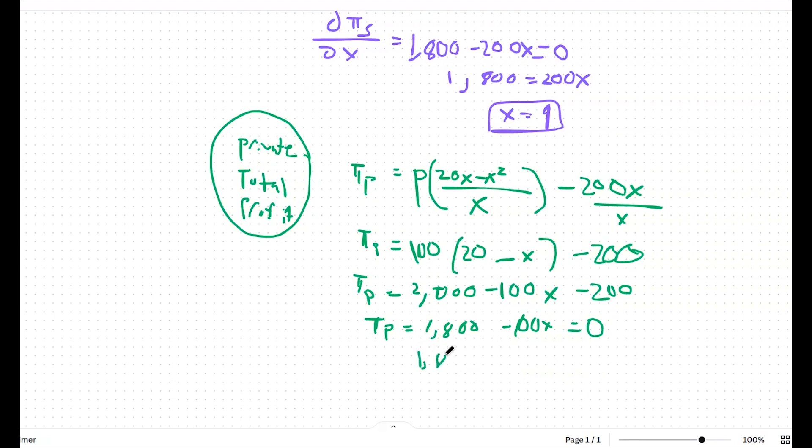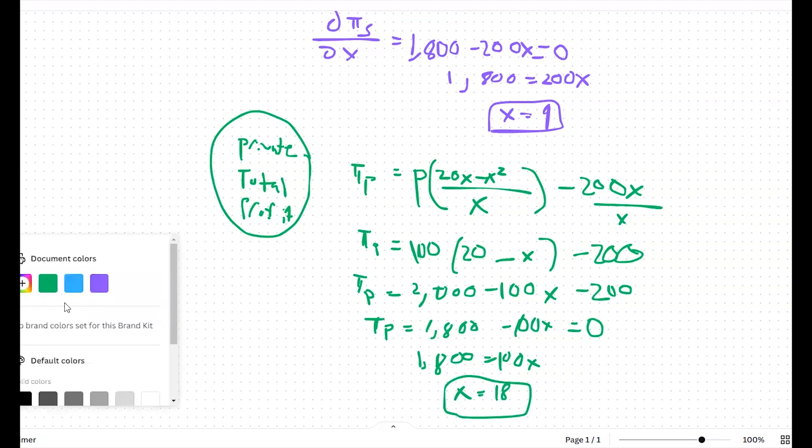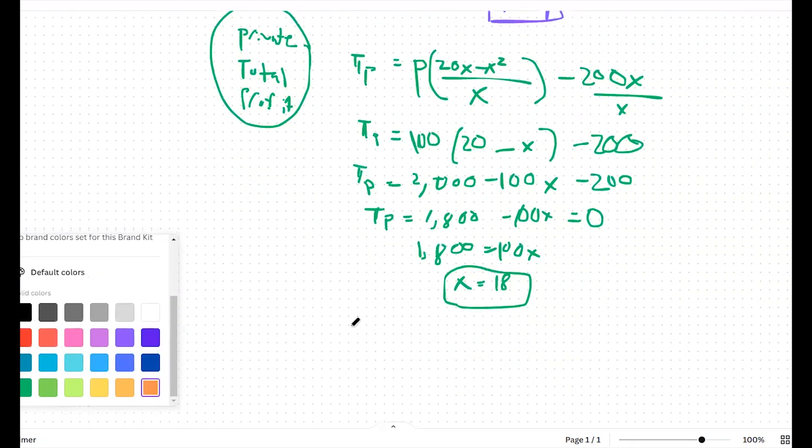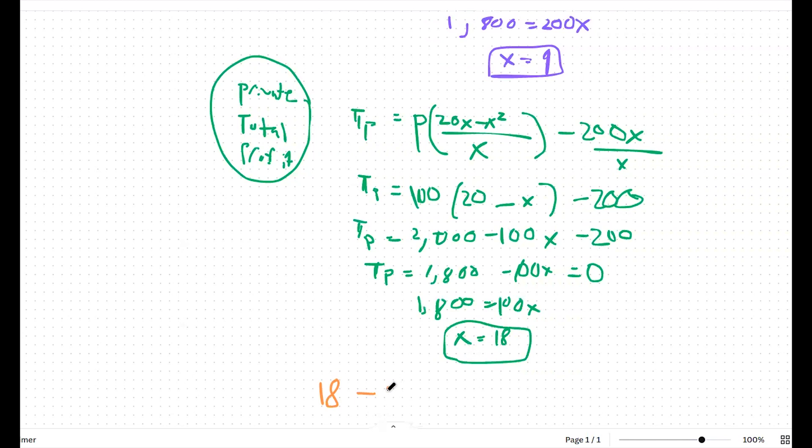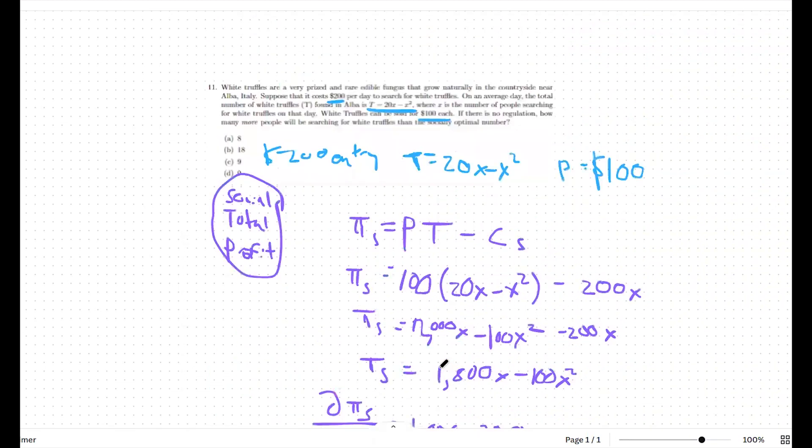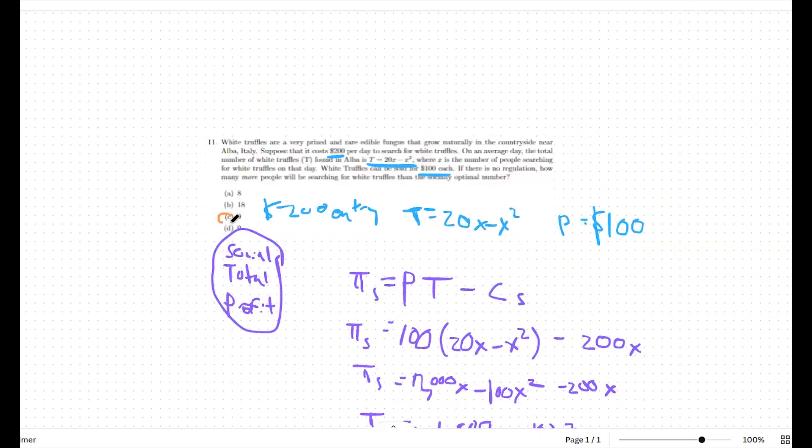From there, we're left with 1800 equals 100x. So when everybody maximizes their private profit, 18 people will go hunting truffles instead of the socially optimal number of nine. So I'll say our private profit number is 18. Our socially optimal number is nine. So there's nine more people hunting than is socially optimal, which would be option C.